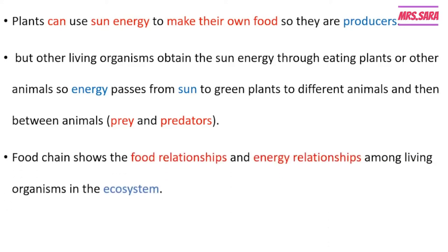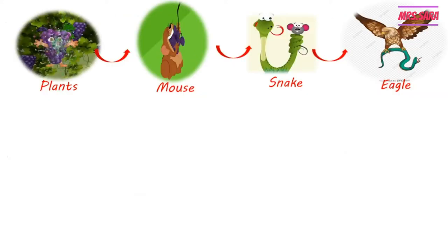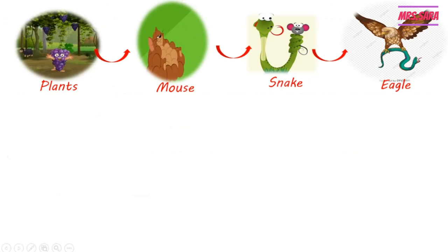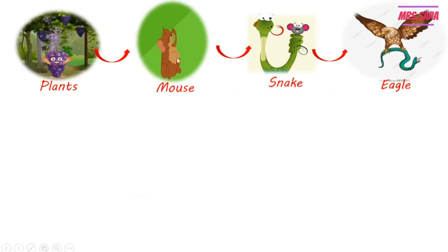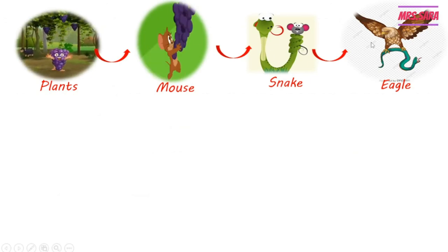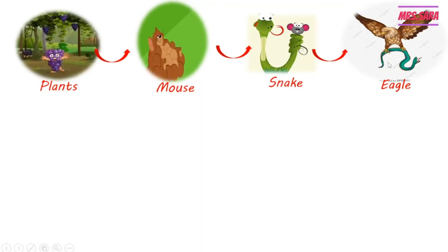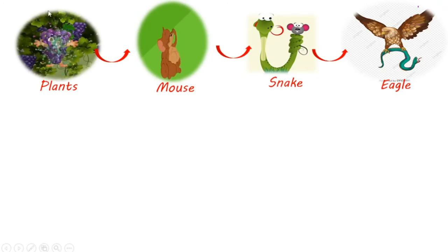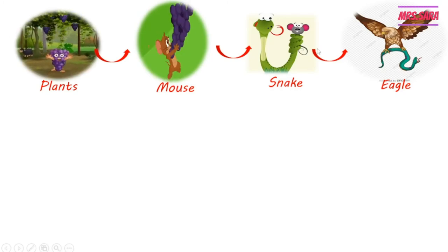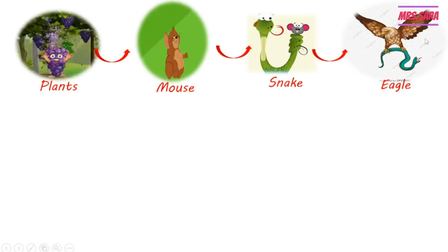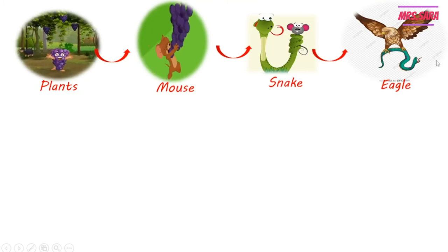The food chain shows the feeding relationships and the energy relationships among living organisms in the ecosystem. The energy passes from the grape to the mouse, then to the snake, then to the eagle, and when the eagle dies, the energy returns to the soil again.